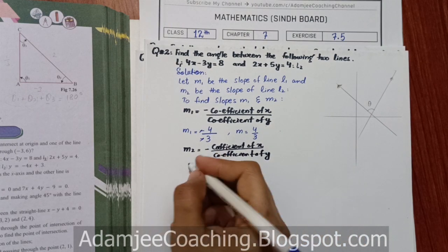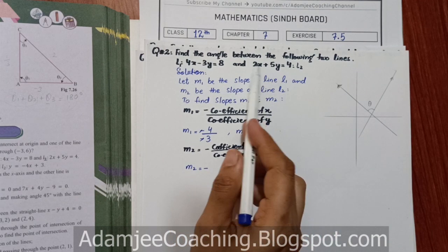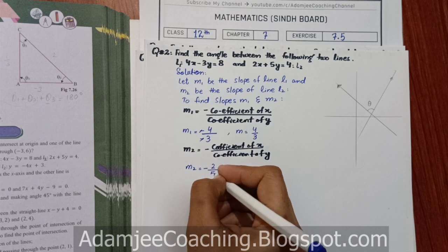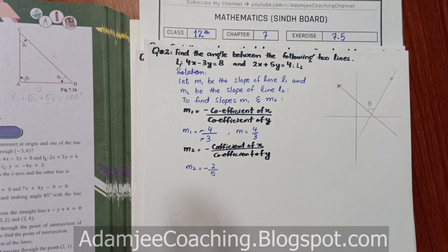M2 to find the line. The coefficient of y2 and the coefficient of y is the same. So here is minus 2 upon 5. M1 bhi aa gaya, M2 bhi aa gaya.